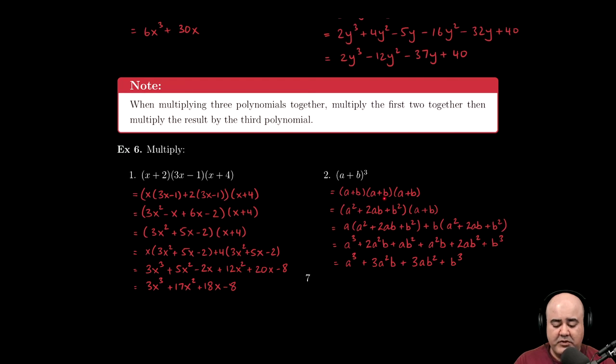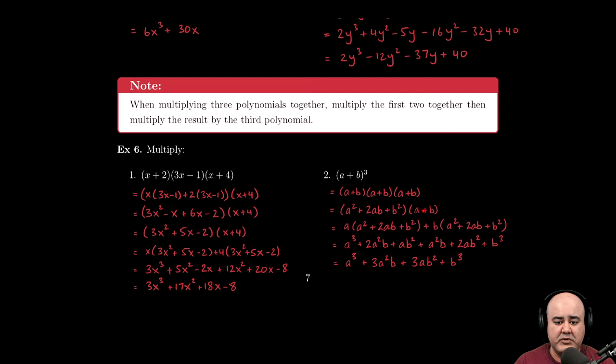But hopefully you remember that there's a nice formula that we can use here for a perfect square. The square of sum formula, which is a² + 2ab + b². If we multiply this by (a + b), we can distribute the a into this trinomial, plus then distribute the b into the trinomial.